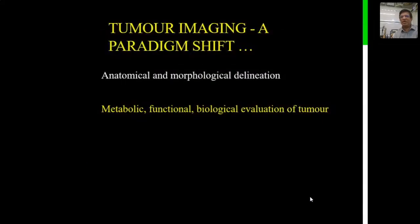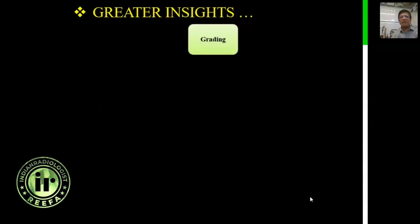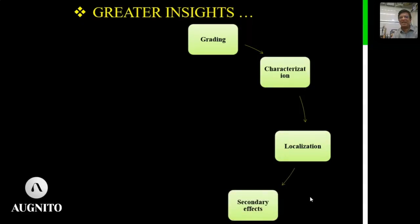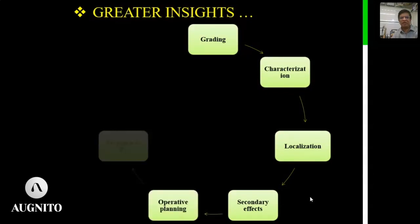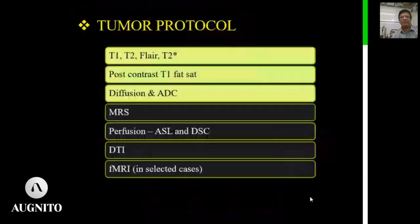When functional and structural imaging are combined together, it gives complete information. This allows the medical oncologist, surgical team, and radiation oncologist greater insights into characterization of the tumor, functional and anatomical localization of the tumor, and better understanding of secondary effects on adjoining white matter tracts and eloquent cortices. It also allows better operative planning, assessment of response to treatment — pseudo-response or true response — and more accurate information about tumor recurrence versus post-treatment changes.